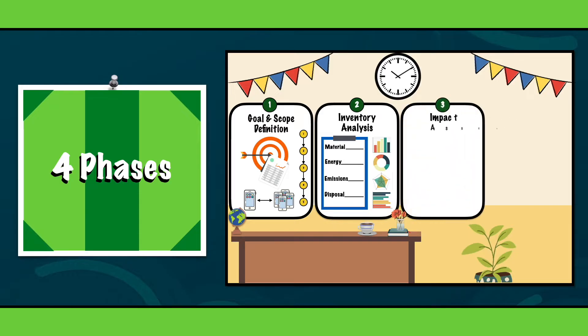Third, impact assessment. In the third phase we evaluate the potential environmental impacts based on the inventory data. Common impact categories include climate change, water use, air pollution and human health. Various methods are used to assess these impacts, allowing us to understand the overall footprint of our product.